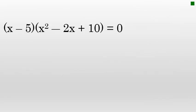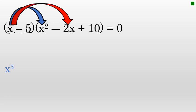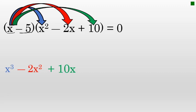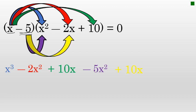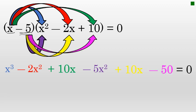Multiplying x minus 5 times x² minus 2x plus 10 involves distributing x to all three terms in the second factor, then distributing negative 5 to all three terms. Distributing x: x times x² is x³; x times negative 2x is negative 2x²; x times 10 is 10x. Distributing negative 5: negative 5 times x² is negative 5x²; negative 5 times negative 2x is positive 10x; negative 5 times positive 10 is negative 50.